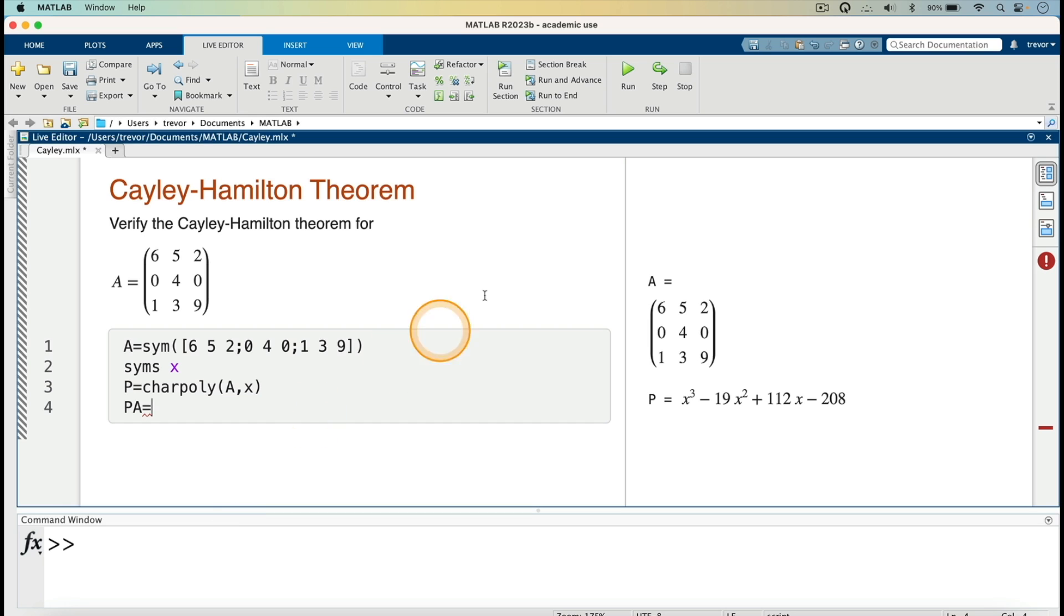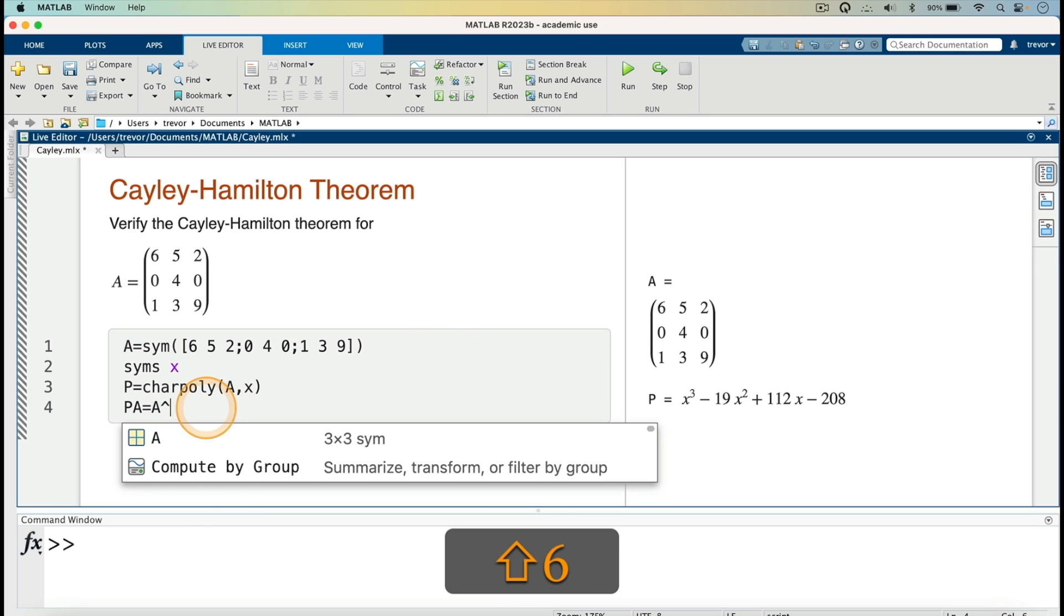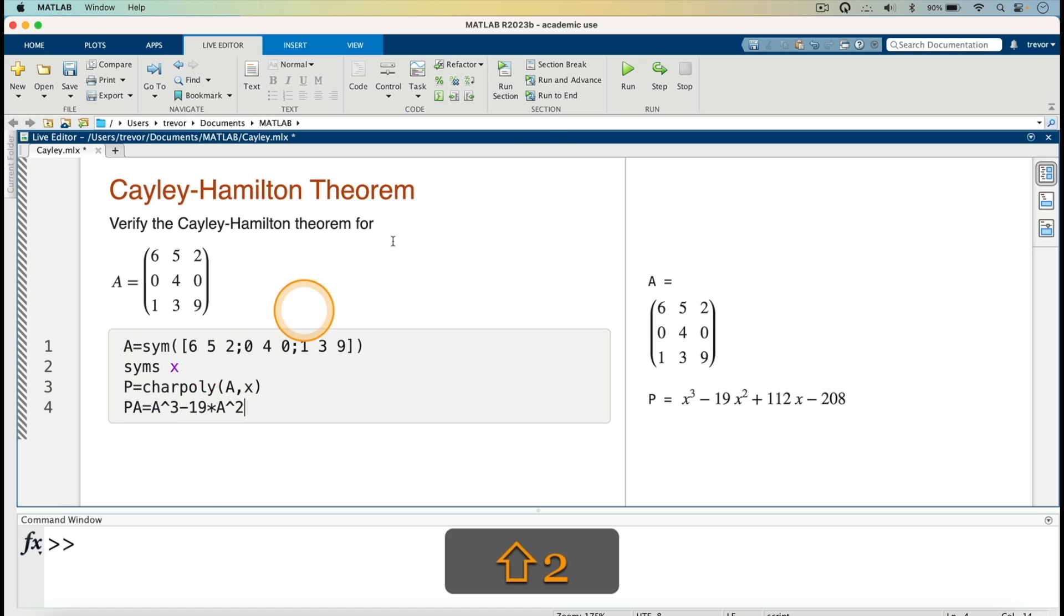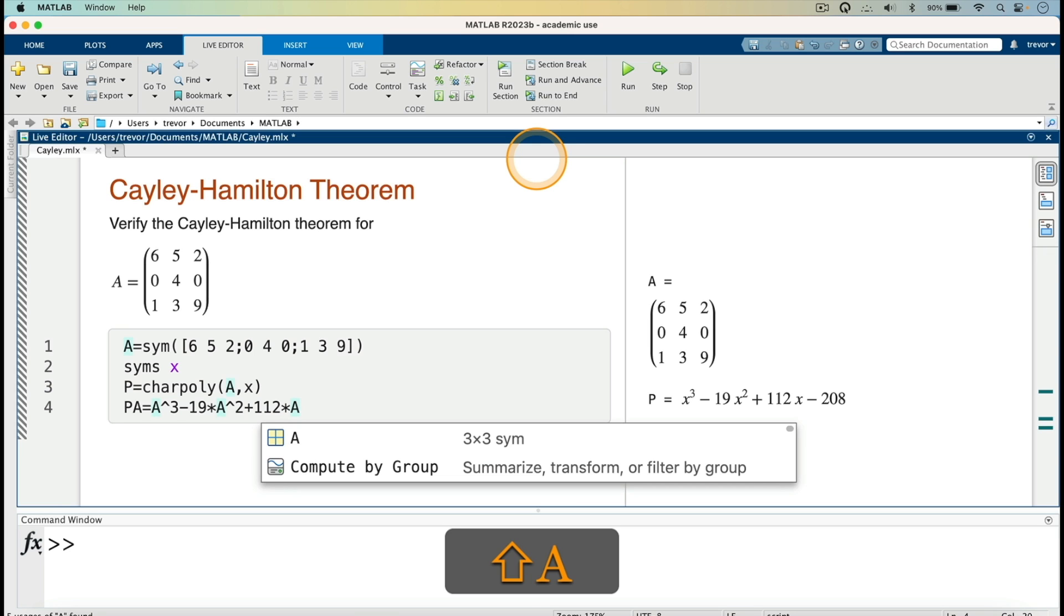So we are saying this one is an x cubed, so we would have A to the power 3, then minus 19 times A squared, so it's A to the power 2. Then plus 112 multiplied by the x, so we are replacing with A, so I will put the A there, then minus 208.